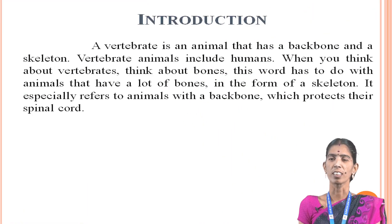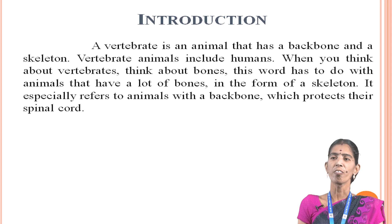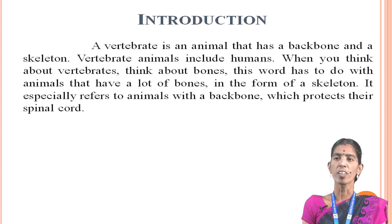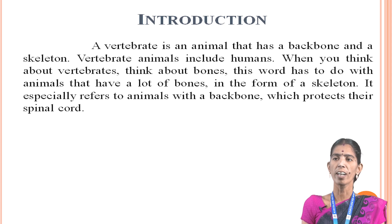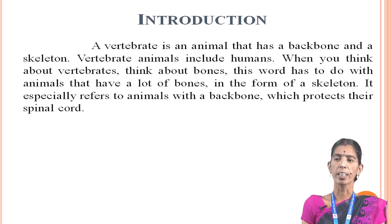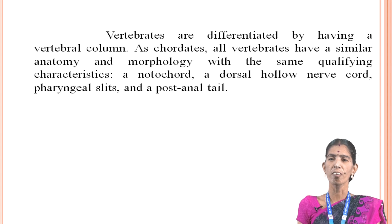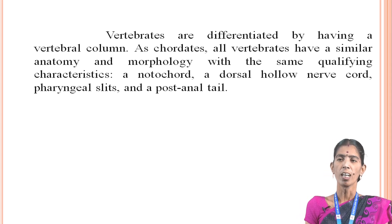First, the introduction. A vertebrate is an animal that has a backbone and a skeleton. Vertebrate animals include humans. When you think about the vertebrate, think about bone — this word has to do with animals that have a lot of bones in the form of a skeleton. It especially refers to animals with a backbone which protects their spinal cord. Vertebrates are differentiated by having a vertebral column.